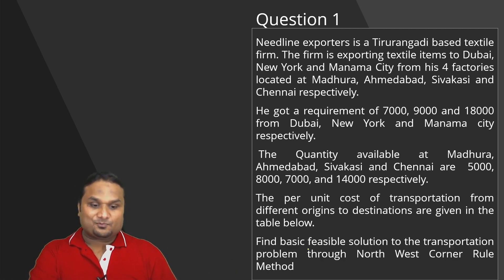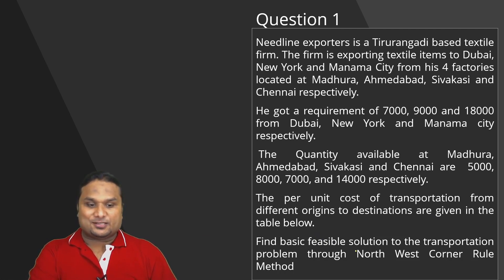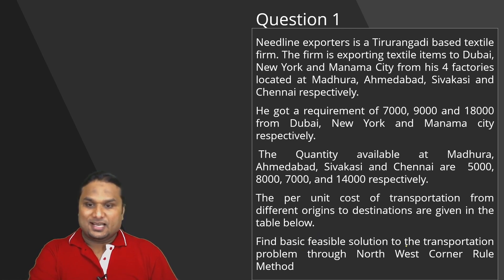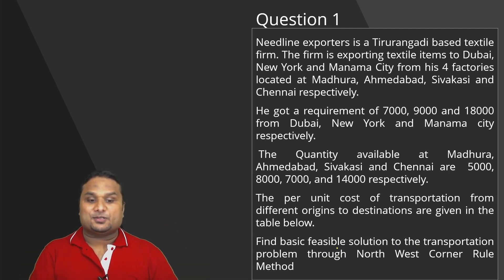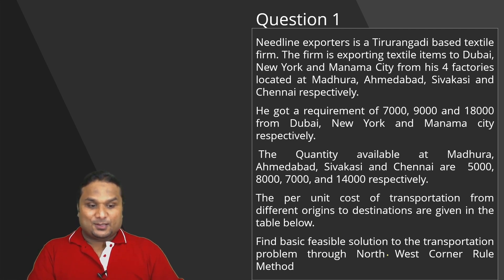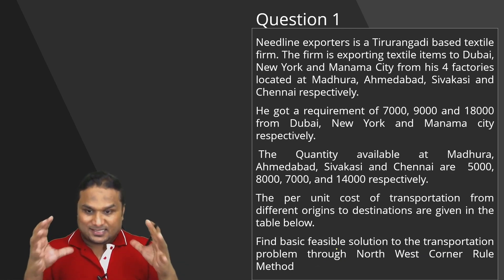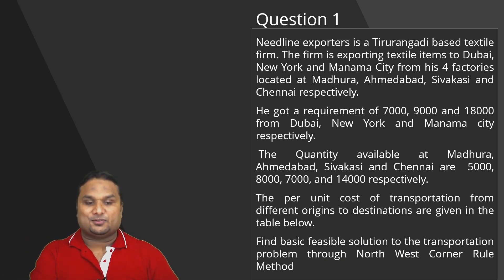Now the question is: as a Cost and Management Accountant student, you are supposed to find out the basic feasible solution. Find the basic feasible solution to the transportation problem through the Northwest Corner Rule method. This is the question and we are supposed to find the basic feasible solution through the Northwest Corner Rule method.